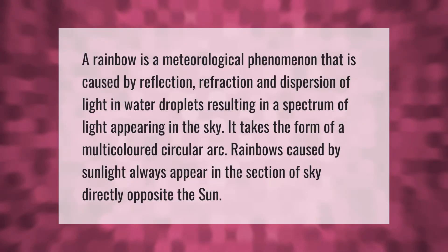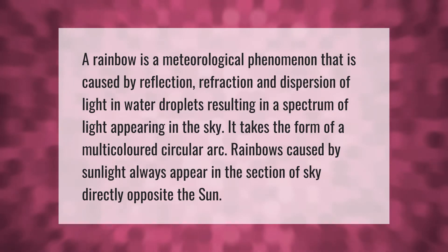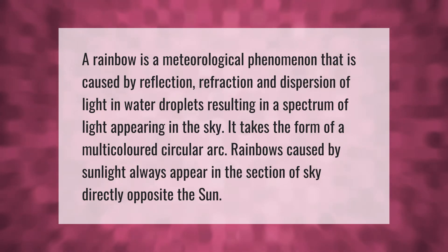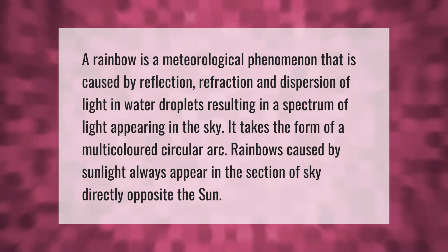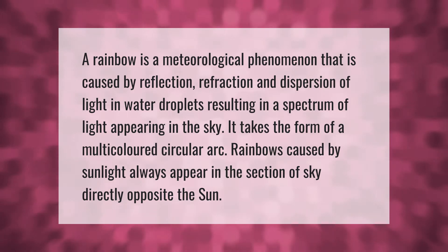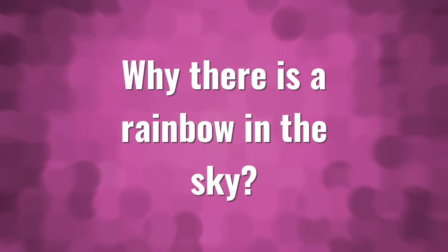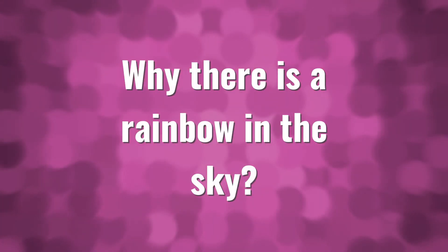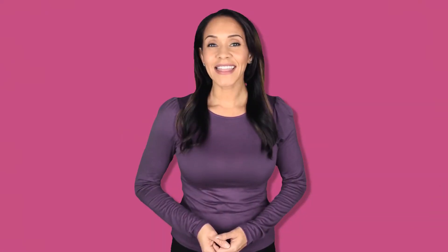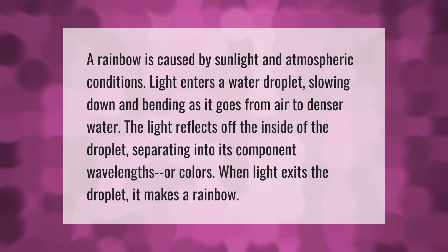A rainbow is a meteorological phenomenon that is caused by reflection, refraction, and dispersion of light in water droplets, resulting in a spectrum of light appearing in the sky. It takes the form of a multi-colored circular arc. Rainbows caused by sunlight always appear in the section of sky directly opposite the Sun.